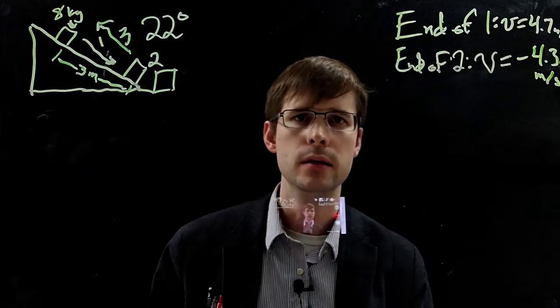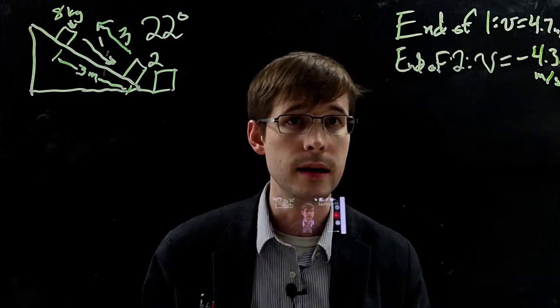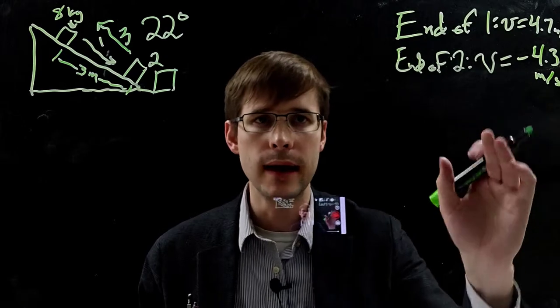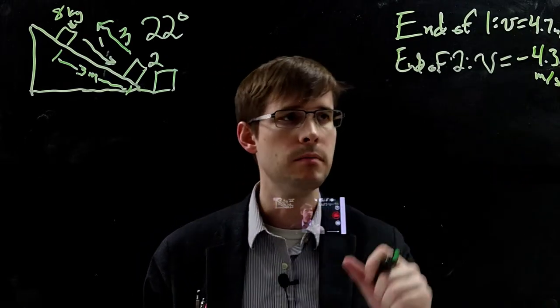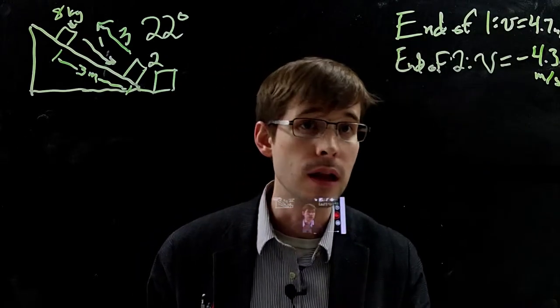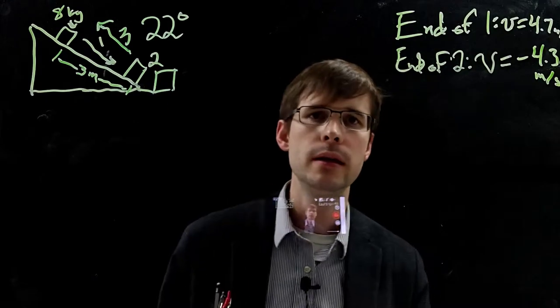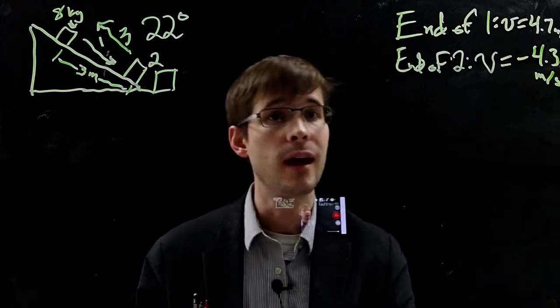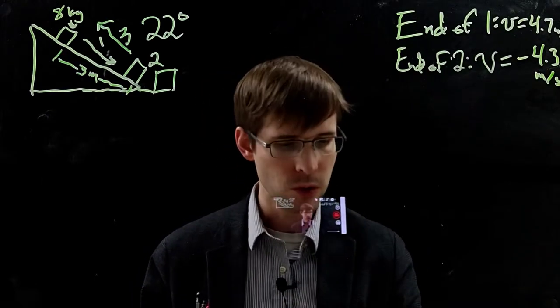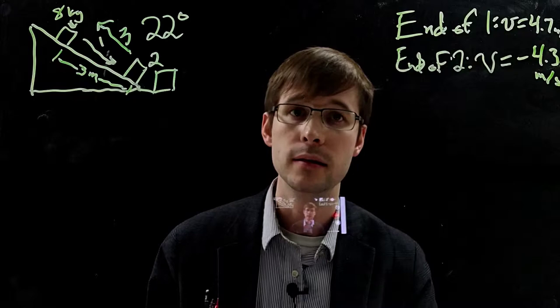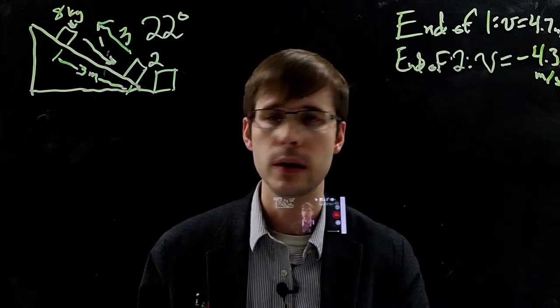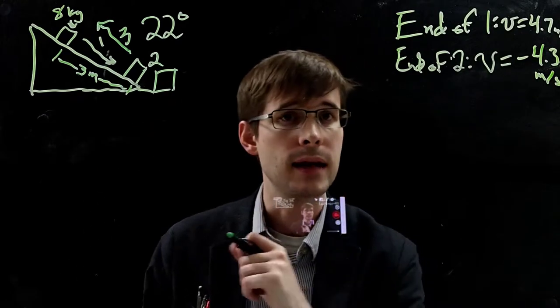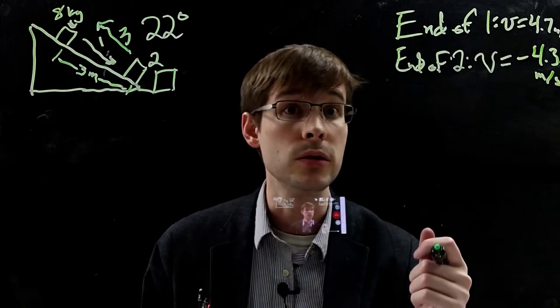All right, so for part three, the block is going back up the incline. And so here we know it's been moving now up the incline at 4.3 meters per second. That's our initial velocity. As it goes up, we can use energy like we did in the first part to figure out how far it goes up the incline. And that's really what we're looking for here is what maximum height does it rise to? So let's calculate that using energy. At the bottom, we've got kinetic energy. At the top, we've got potential energy. It's just the reverse of part one.